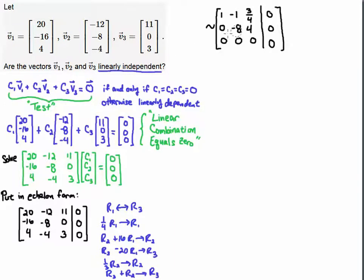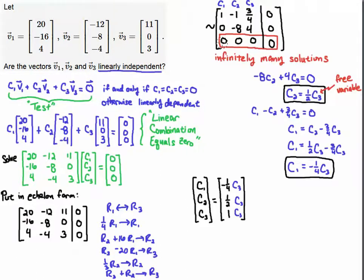Alright, so now I have this reduced system. I notice that when I have a row of all zeros here in an augmented system, that means I have infinitely many solutions.